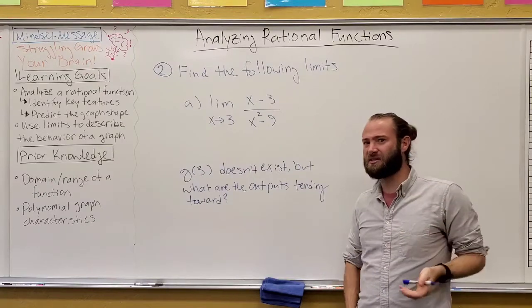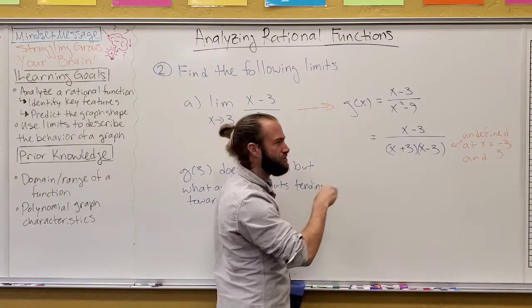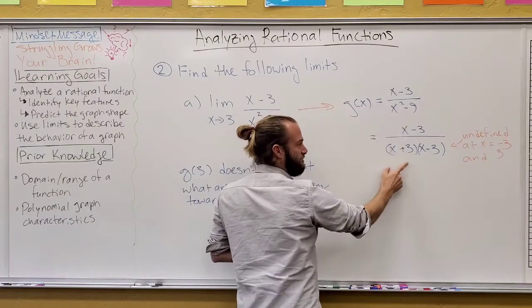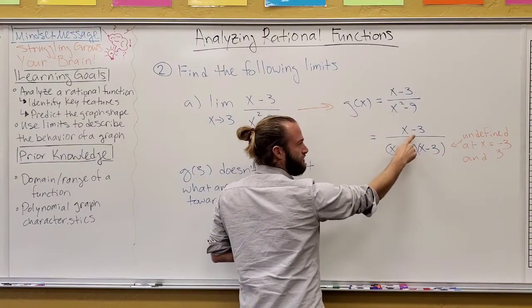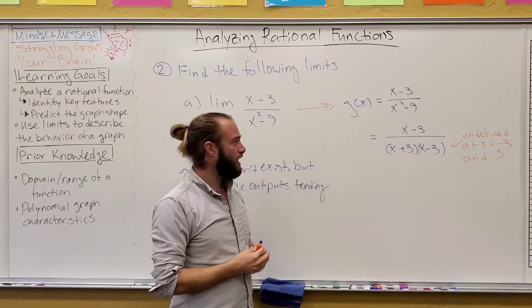but as we looked at that graph, what output does it seem they're tending towards? We can actually play with this a little bit and see. So, off to the side here, let's just play with the algebra here. G of x, the bottom can actually be factored out, as you notice, and you'll notice that you share a factor here, x minus three, on top and on the bottom.